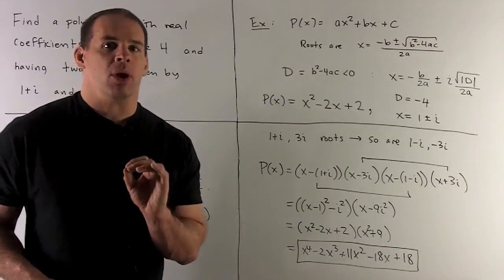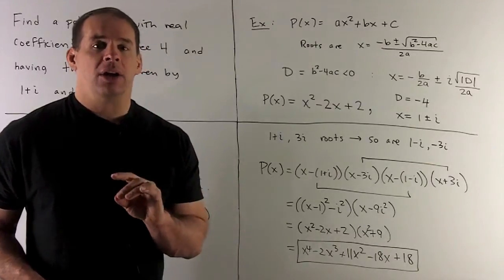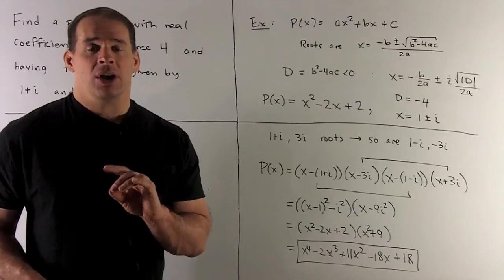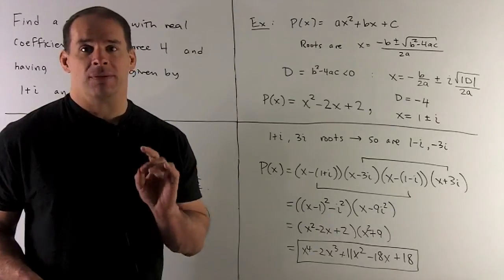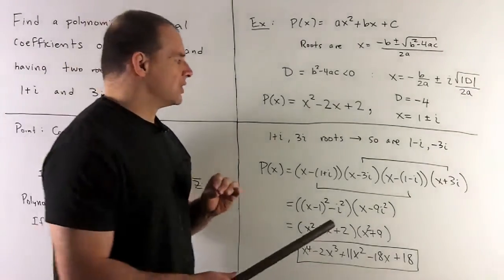The easiest way to multiply this out, you can grind it out, but it's better to pair the conjugates together. That way you're going to have differences of two squares.